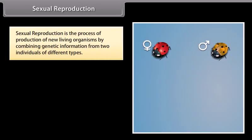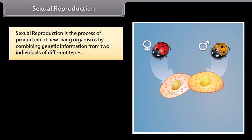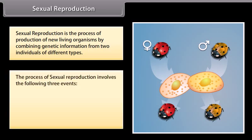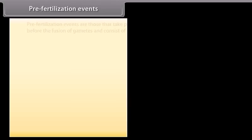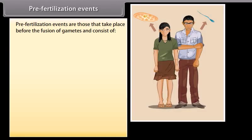Sexual reproduction is the process of production of new living organisms by combining genetic information from two individuals of different types. The process of sexual reproduction involves the following three events: pre-fertilization events, fertilization events, and post-fertilization events.